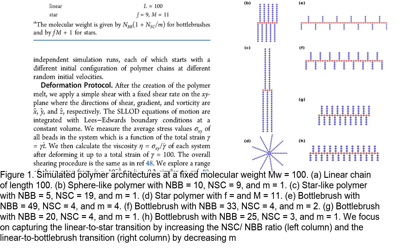The figure shows the different architectural configurations studied in this work. The authors investigated the rheology of unentangled bottlebrush polymer melts with various architectures, including linear chains, comb polymers, densely grafted bottlebrushes, star-like bottlebrushes, and star polymers. These architectures represent different combinations of backbone length (NBB), side chain length (NSC), and spacing between grafted side chains (M). The figure also shows representative snapshots of a single bottlebrush chain and a linear chain at the lowest and highest shear rates.